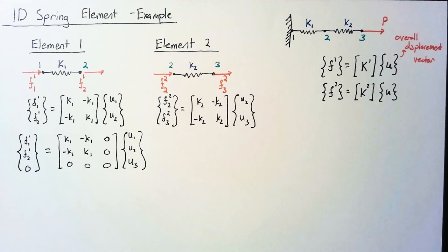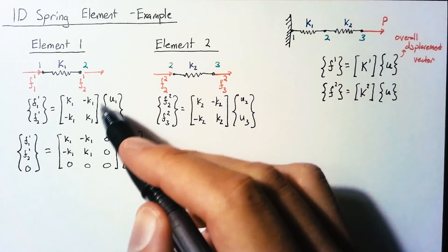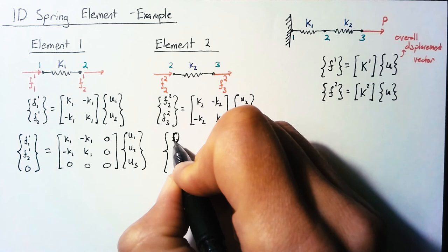Now we can do the same thing with our second set of equations. This time though, we're going to put an empty spot in the top one and then have the two equations in the bottom two slots.